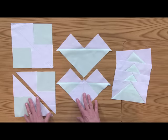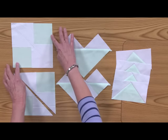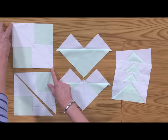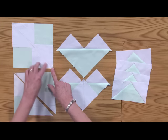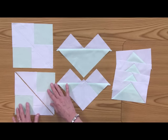You'll need to make flying geese units for this quilt. To make flying geese, you'll take your large square, put two smaller squares in the corners, draw a diagonal line from corner to corner, sew a quarter inch on both sides of the line, and then cut right on that drawn line.